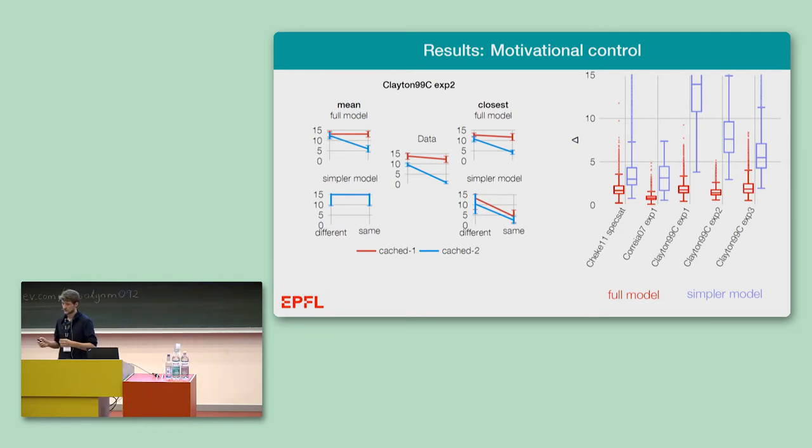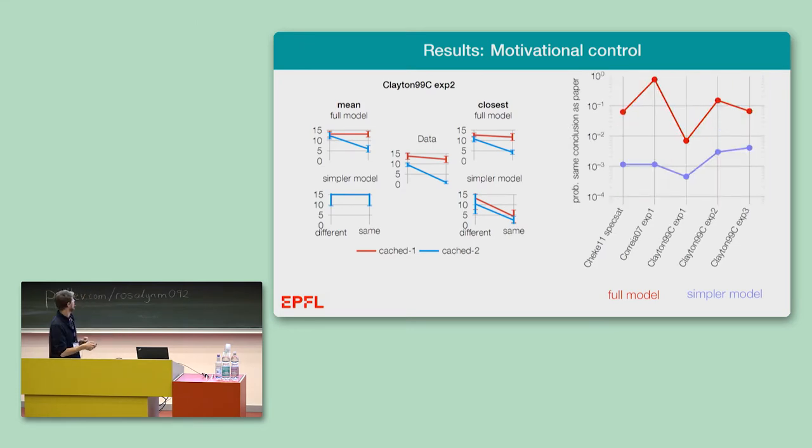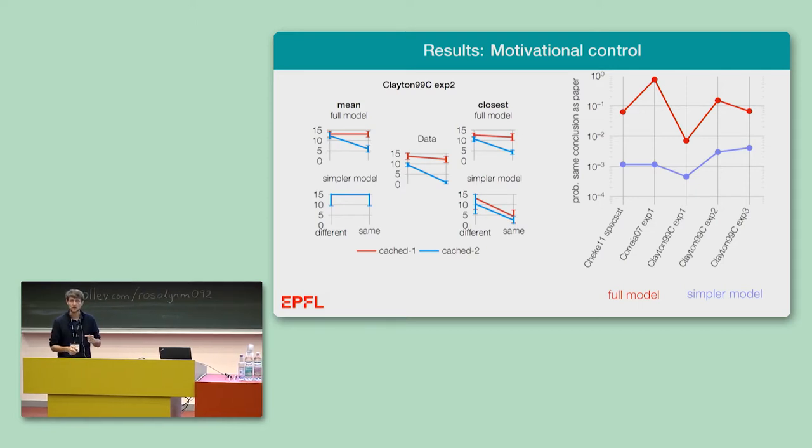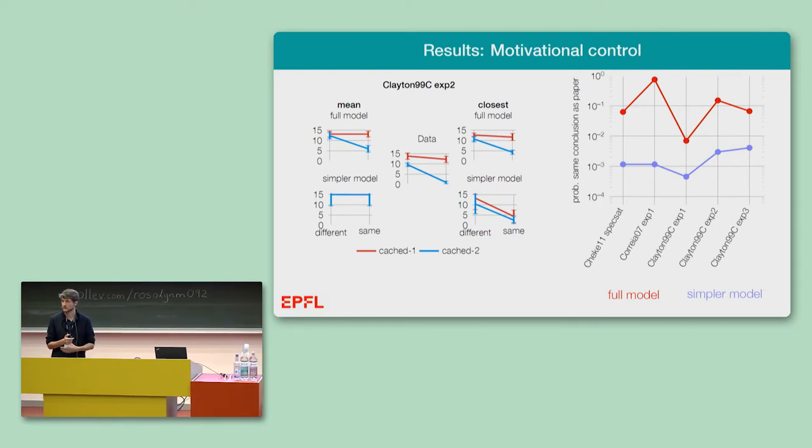We can also look at this across all five experiments that studied motivational control, and we see that the distribution of differences between simulated summaries and actual summaries has more mass at small difference, more mass close to zero for the full model, but not for the simpler model. While looking at yet another measure - this is the fraction of simulated experiments where we would basically get the same conclusion as that one reported in the paper - we see that the full model reaches, with way higher probability, the same conclusion as the simpler model.